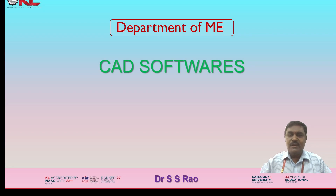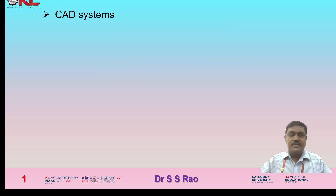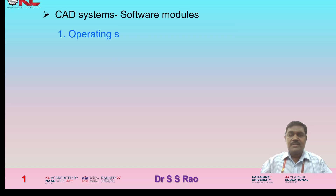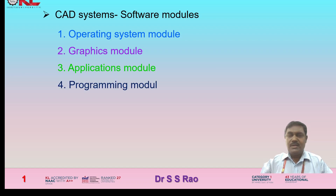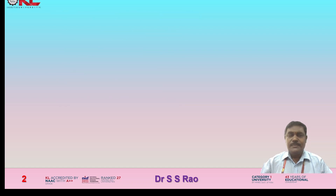In this video, I am going to explain different CAD softwares — CAD systems software modules. The different modules are: operating system module, graphics module, applications module, programming module, and communication module. As for each module, the software practices will be covered.